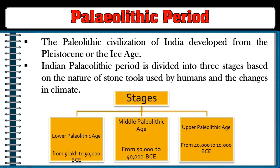The Paleolithic civilization of India developed from the Pleistocene or Ice Age. The Indian Paleolithic period is divided into three stages based on the nature of stone tools used and changes in climate: the Lower Paleolithic Age (5 lakh to 50,000 BCE), the Middle Paleolithic Age (50,000 to 40,000 BCE), and the Upper Paleolithic Age (40,000 to 10,000 BCE).